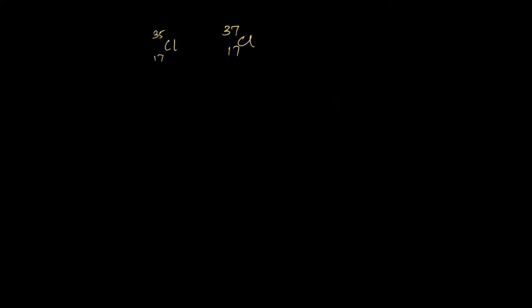The most common isotopes you'll encounter at this level will be chlorine. If you look at the periodic table, the A value for chlorine is given as 35.5. That's because about 75% of naturally occurring chlorine has the nuclide with nucleon number 35, and about 25% has a nucleon number of 37. So chlorine-35 and chlorine-37 are isotopes of chlorine — they are different forms of the same element with the same number of protons but a different number of neutrons.